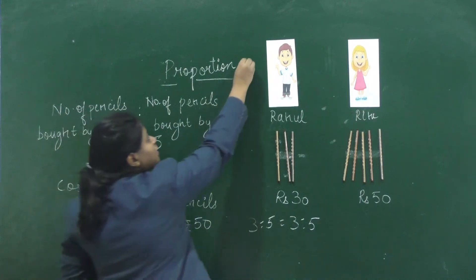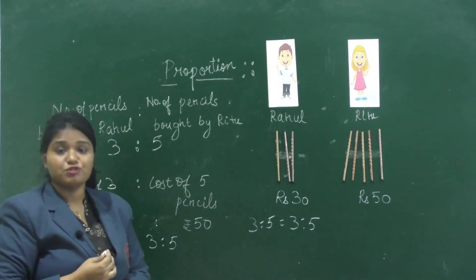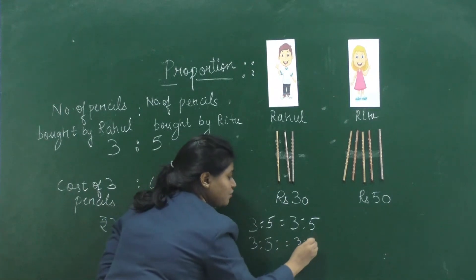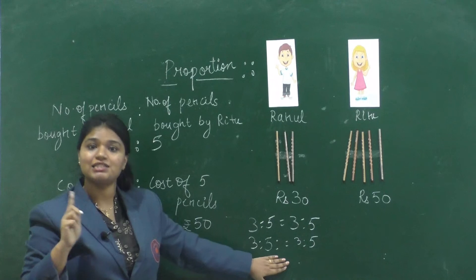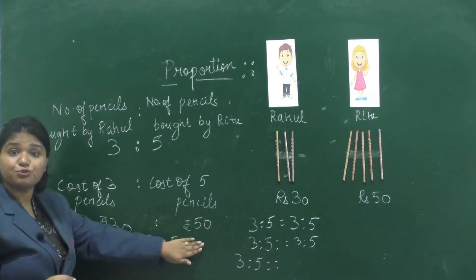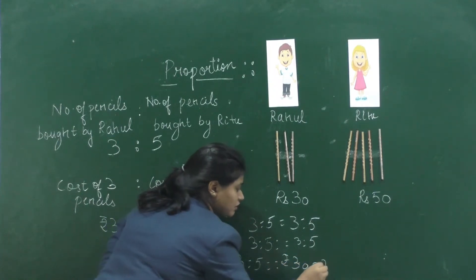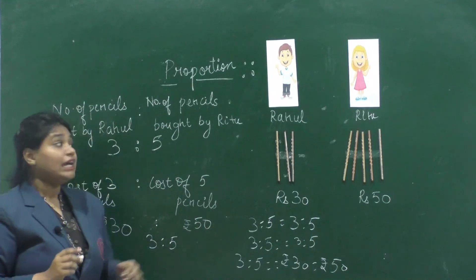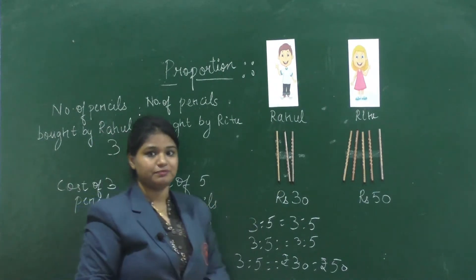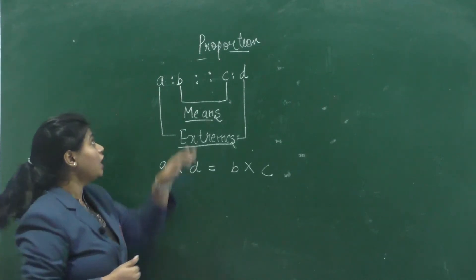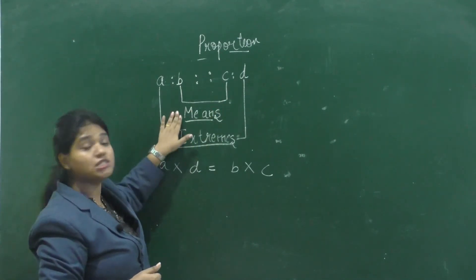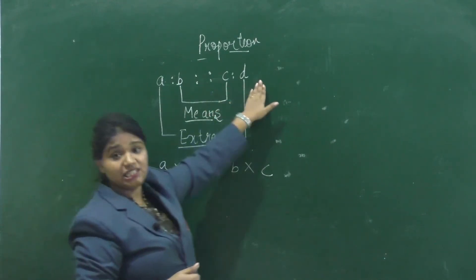We use double colons to express proportion, read as 'as to'. So we write 3 is to 5 as to 30 is to 50, meaning neither Rahul nor Ritu paid an extra amount. In a proportion, the first and last terms are known as extremes, and the second and third terms are known as means.